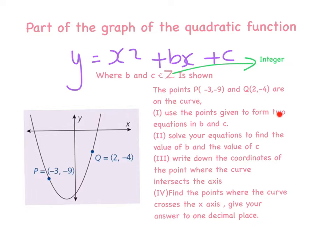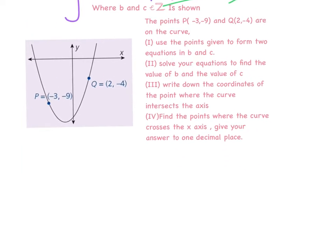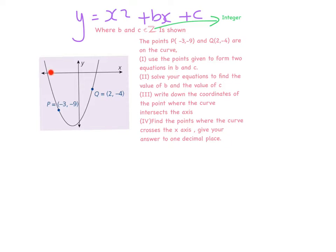The first question asks us to use the points given to form two equations in b and c. We don't know what the equation is, but we know it forms y equals x squared plus bx plus c. We can see that the point (-3, -9) is on the graph. If it's on the graph, when we substitute it in, it should work out. So that's what we're going to do first.